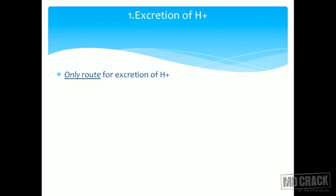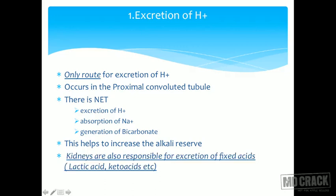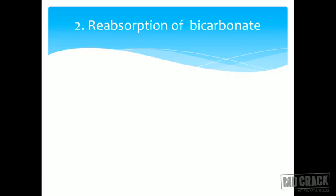Excretion of protons: the kidneys are the only route for excretion of acid from the body. It occurs in the proximal convoluted tubule — there is net excretion of H+, absorption of sodium, and generation of bicarbonate. This helps increase the alkali reserve. The kidneys are also responsible for excretion of fixed acids like lactic acid, keto acids, etc.